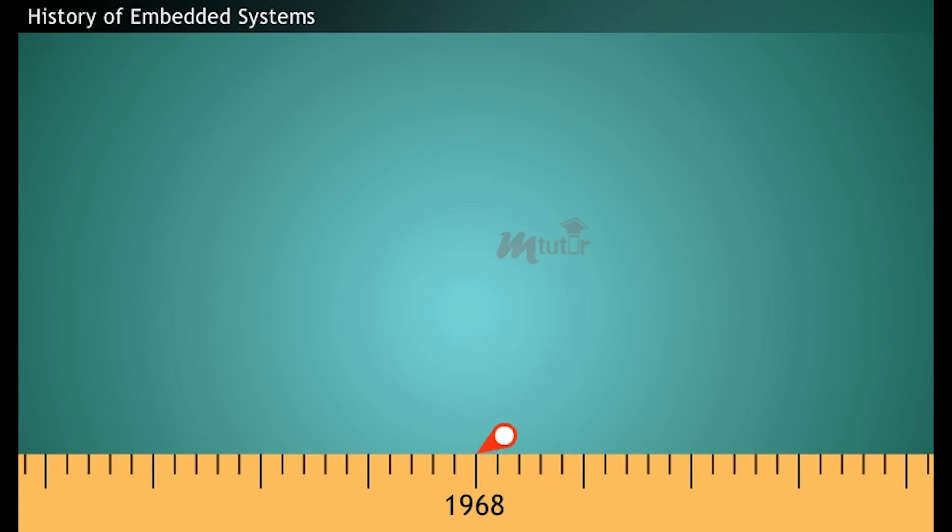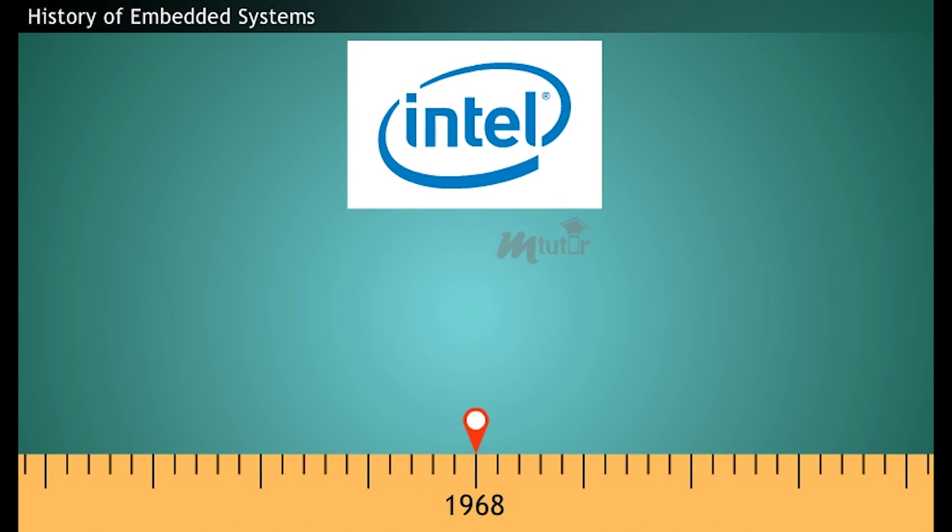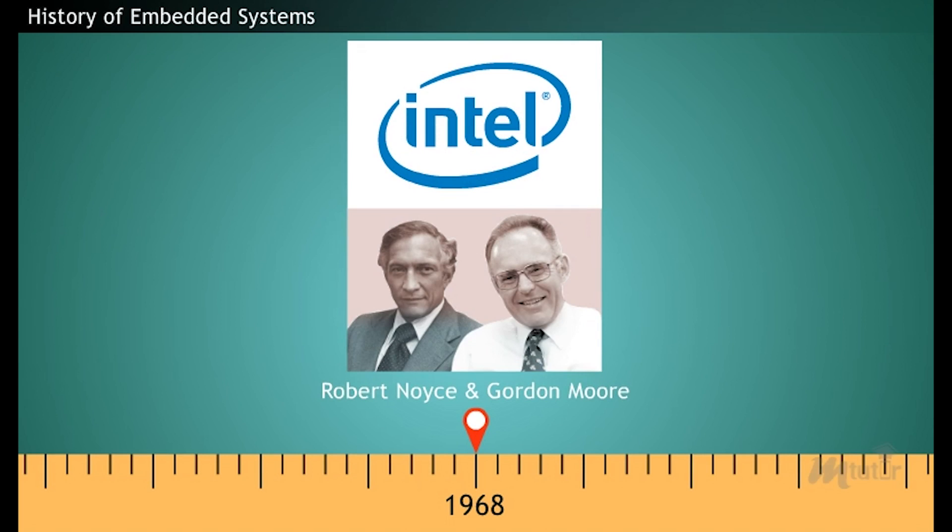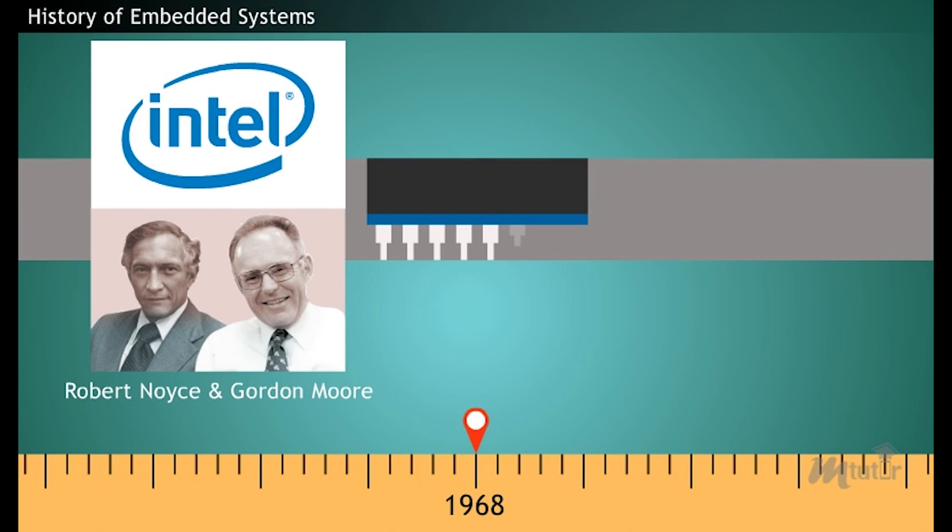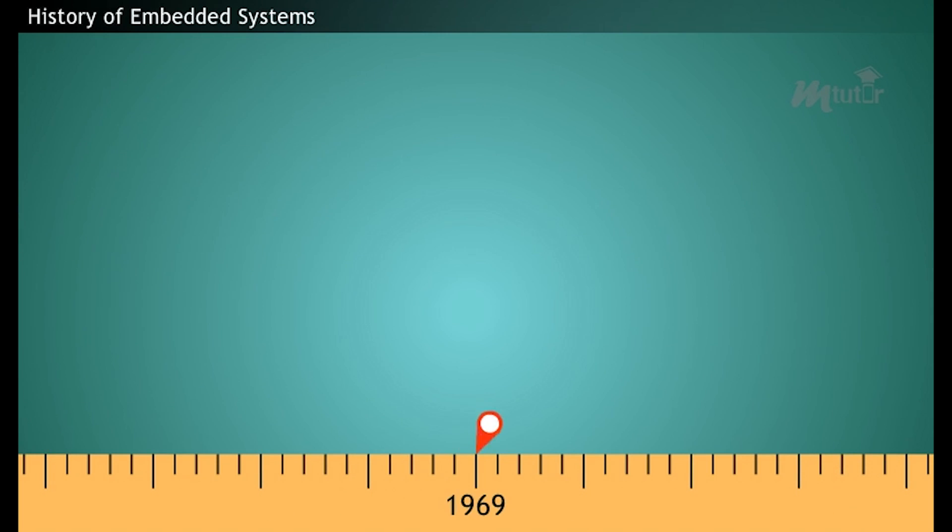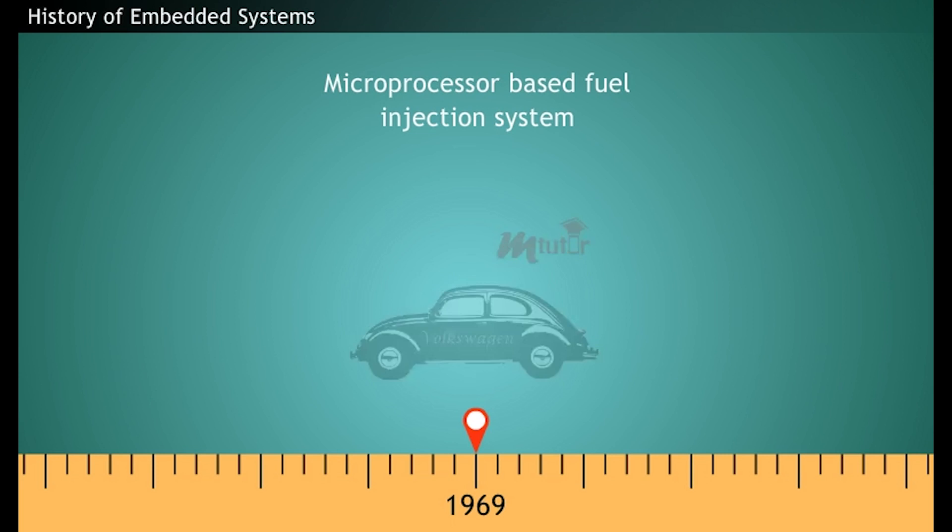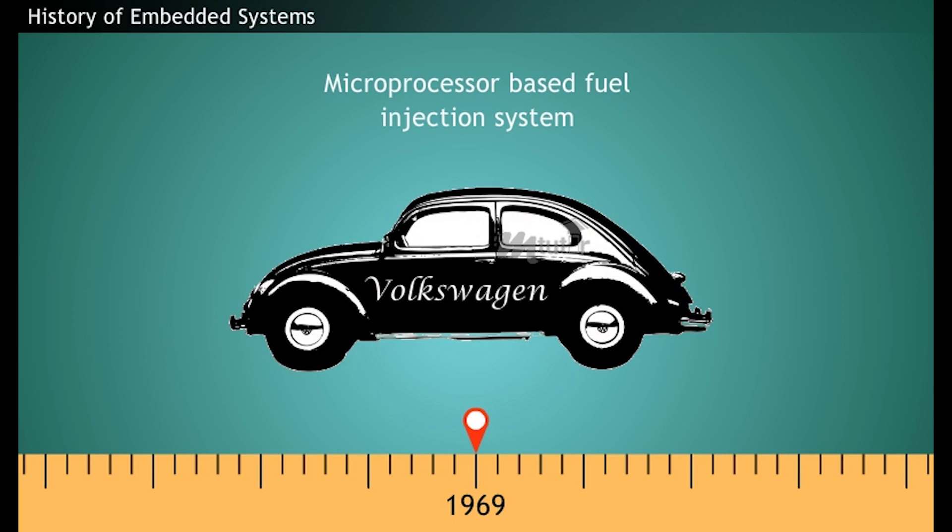In 1968, Intel was founded by Robert Noyce and Gordon Moore. The beginning of Intel led to the evolution of microcontrollers and microprocessors which is the heart of many modern electronics. In 1969, microprocessor-based fuel injection system was introduced in the Volkswagen cars and was a breakthrough in the field of the embedded systems.